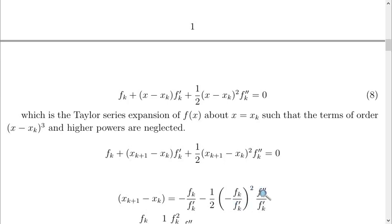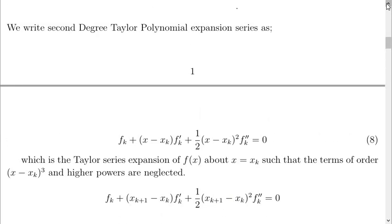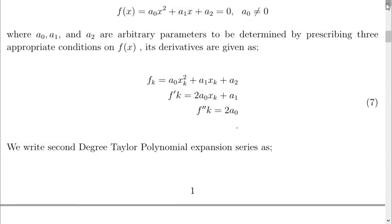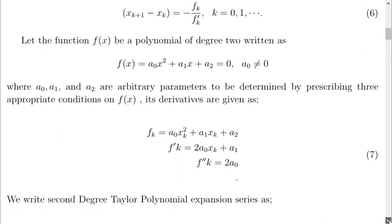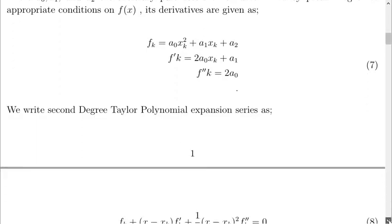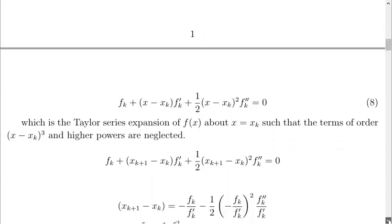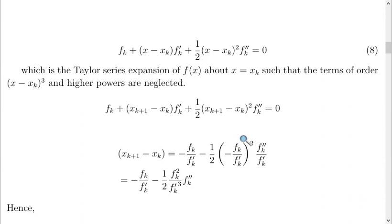This expression is being represented by this. We were able to show in an equation that s of k plus 1 minus s of k equals to minus fk over f prime k. This is what we use in this equation here. By the time you square it, the minus sign will go away and we have this.